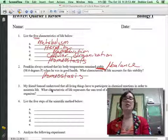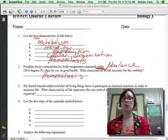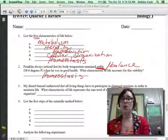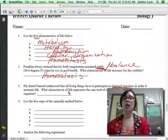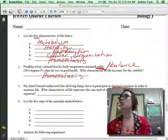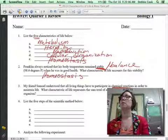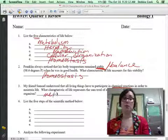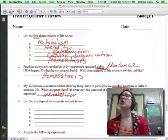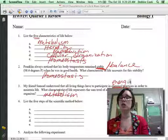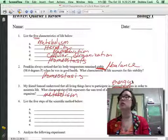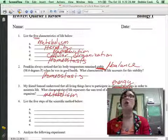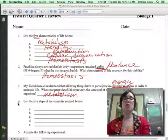Let's look at number three. My friend Samuel understood that all living things have to participate in, here's the key, chemical reactions in order to maintain life. What characteristic of life represents the sum total of all chemical reactions inside of an organism? Metabolism. So metabolism. What if instead of saying chemical reactions, what if instead I said energy? Would it still be metabolism? Yes, it would. So energy or chemical reactions are all going to mean metabolism.